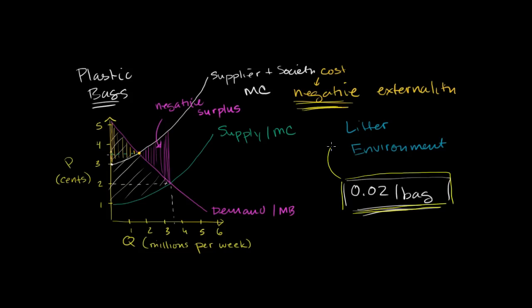And we assumed that we were able to calculate the actual external cost of a plastic bag. This $0.02 a bag is the impact on litter and the environment. And then we were able to figure out that if we factor this in, instead of just having the regular marginal cost curve of the suppliers, if we added that marginal cost curve to the external cost, we would get a supplier plus external cost marginal cost curve. And then we get what is actually the optimal price and quantity of plastic bags so that we actually do not eat into our surplus by creating all of this negative surplus where the total cost of the bags are higher than the total benefit.